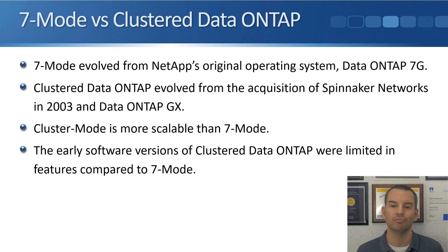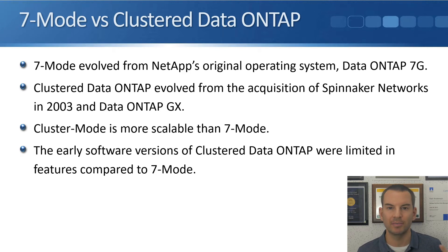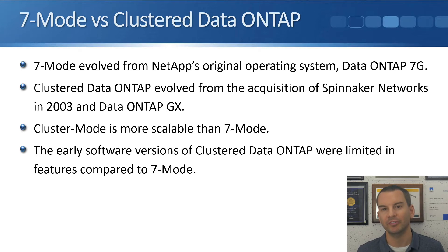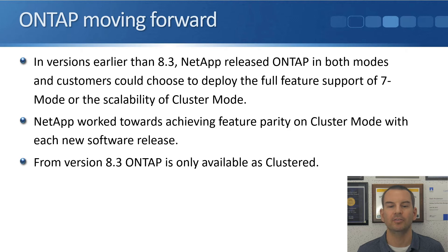7-MODE evolved from NetApp's original operating system, Data ONTAP 7G. Clustered Data ONTAP evolved from the acquisition of Spinnaker Networks in 2003 and Data ONTAP GX. Why would NetApp have two operating systems doing the same job on the same hardware? There was a limitation with both versions: Cluster Mode was more scalable than 7-MODE, but early versions of Clustered Data ONTAP were limited in features. So customers chose either the full feature set of 7-MODE or the scalability of Cluster Mode, but not both.